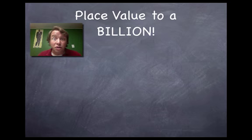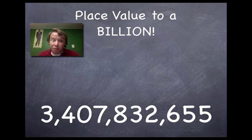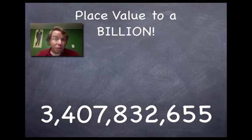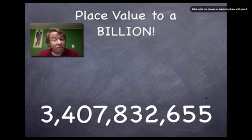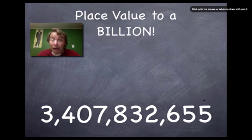We're going to label our place values out to the billions — just the one billions place. Let's take a look at this number. That's a giant number. I can read it: three billion, four hundred and seven million, eight hundred and thirty-two thousand, six hundred and fifty-five. When we start with place value, I always start on the right-hand side. In math, a lot of times it's the opposite of reading words — you start on the right side.